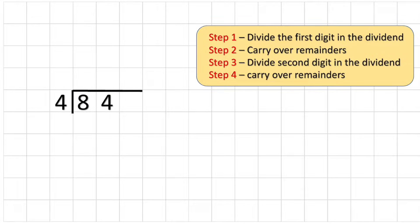And then we're going to need some steps to follow to answer this question. So we have four steps. The first step is going to be to divide the first digit, which in this case is the eight, by the dividend, the four. Then we'll carry over any remainders, and then we'll divide the second digit in the dividend, and again carry over any remainders. And then we would repeat this step if we had more digits.